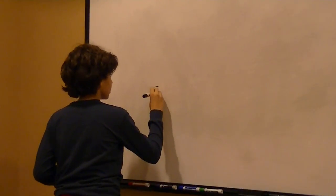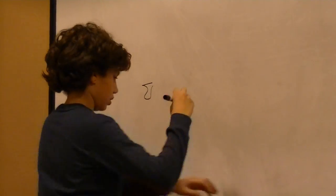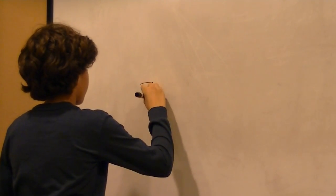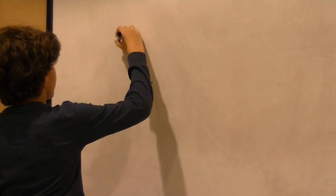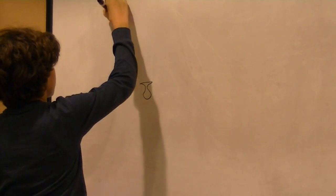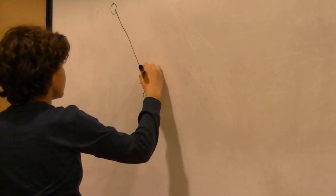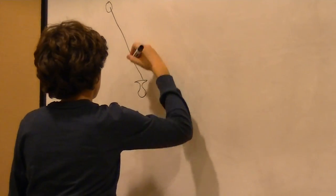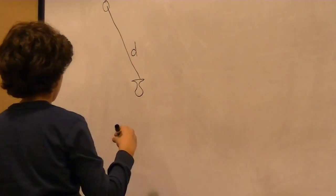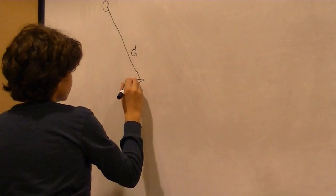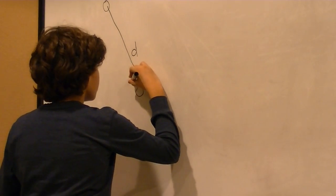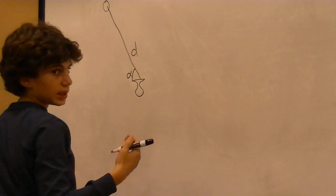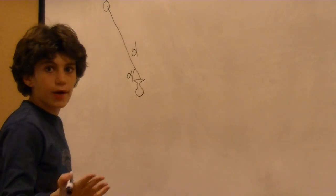This is my cannon, and this is my target. The distance between the target and the cannon I'll call d. And this angle over here, this full angle, I'll call alpha. What I need is my distance d and alpha.